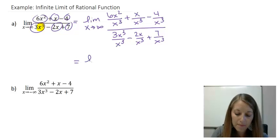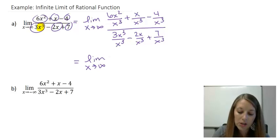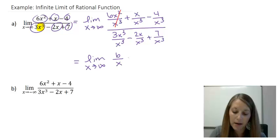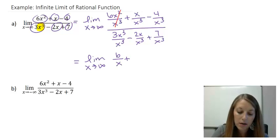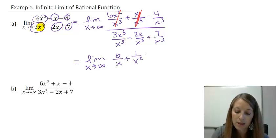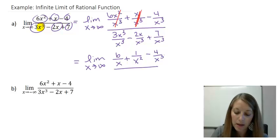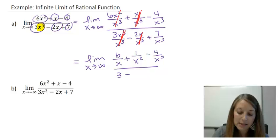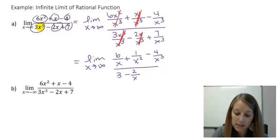Let me simplify. x² over x³ — two of them cancel out, leaving me with 6 over x. Plus, x over x³ — one x cancels out, leaving me with 1 over x². Then minus 4 over x³, which I cannot simplify. In the denominator, x³ over x³ cancel out, leaving me with 3. Then 2x over x³ — one x cancels out, leaving me with 2 over x². And 7 over x³ does not simplify.